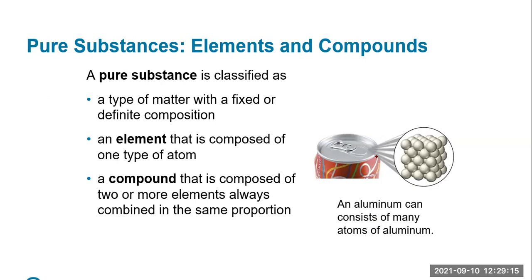A pure substance is again a type of matter that has a fixed or definite composition. An element is basically as far back as you can go in terms of matter — it is composed of atoms, which have protons, electrons, and neutrons. A compound is always composed of two or more elements combined in the same proportion. For example, water is a compound — it is made up of hydrogen and oxygen elements. A word that is sometimes confused is compound versus molecule.